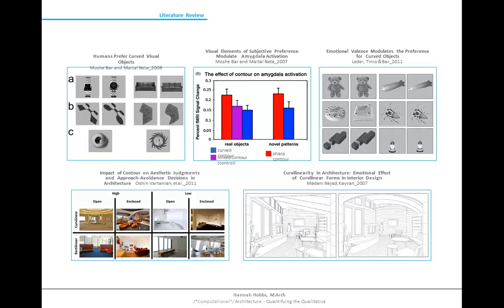A portion of the literature review discussed both neuroscientific and architectonic studies conducted to understand if and how people preferred different contours. The top three are neuroscientific studies and were the original support to examine curvature in architecture by establishing the need to understand how contours — both curved and sharp — affect us. These neuroscientific studies gave precedent not only to my study but also to the architectonic studies shown here.